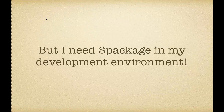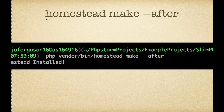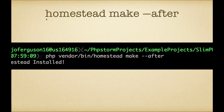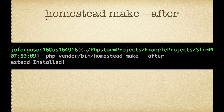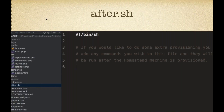That way, when they run the Homestead make command, they can just copy those changes in. What if you need some other package that Homestead doesn't provide? You can run the Homestead make command with the --after flag: php vendor/bin/homestead make --after. This adds an after.sh bash script into the root of your project. You don't have to worry about this overwriting any of your changes in Homestead.yaml — the make command only copies files if they don't exist. So you can run this command over and over without overwriting anything. If you do break something, just delete the files and run the command again to restore safe defaults.